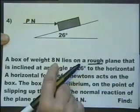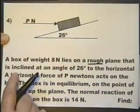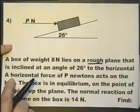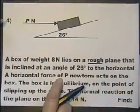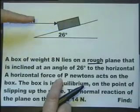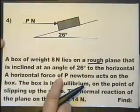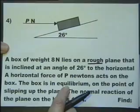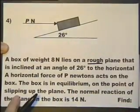A box of weight 8 Newtons lies on a rough plane that's inclined at an angle of 26 degrees to the horizontal. A horizontal force of P Newtons acts upon the box. The box is in equilibrium on the point of slipping up the plane.